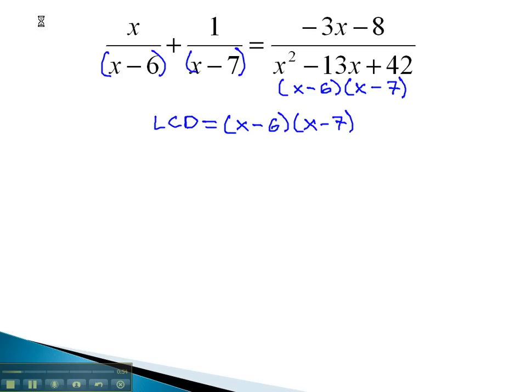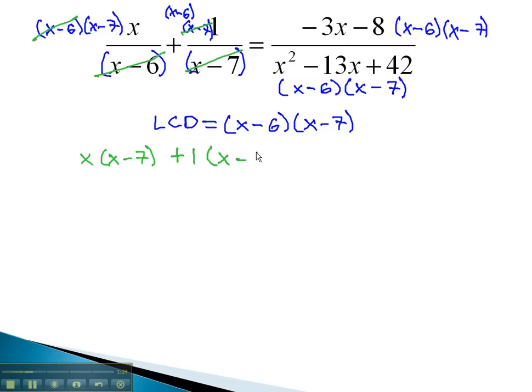We will then multiply each term by x minus 6, x minus 7. When we do this, the x minus 6 divides out of the first fraction, leaving just an x times the x minus 7. The x minus 7 divides out of the second fraction, leaving just plus 1 times x minus 6. In the last fraction, after the equals, we have both the x minus 6 and the x minus 7 dividing out, so all we're left with is negative 3x minus 8.